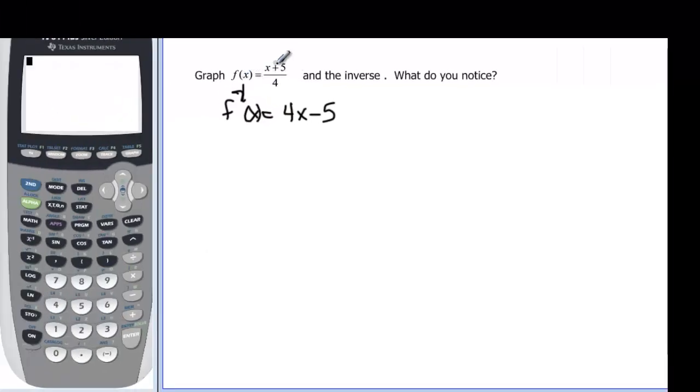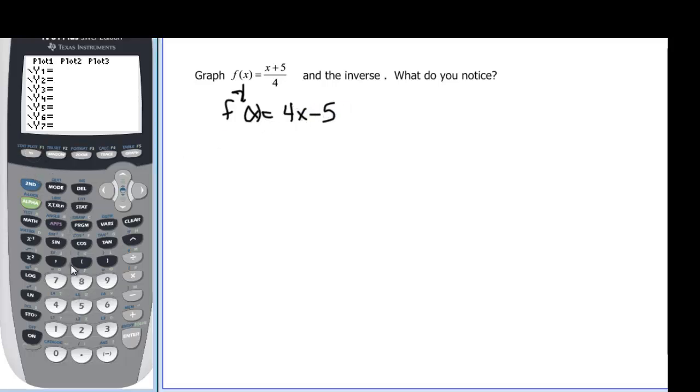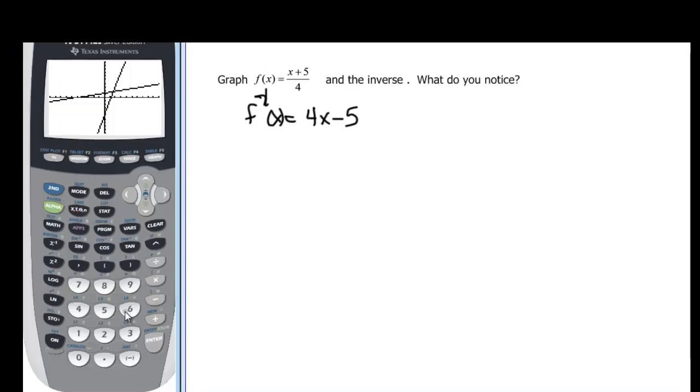This is our function. f(x) is equal to (x+5)/4, and the inverse function, if you remember, was 4x-5. So I want to graph both of those on my calculator. So in parentheses, I have to write the x+5, remember, because it's more than one term up there, divided by my 4, and then y2, I'm going to have 4x-5. And if I graph it, it says, what do you notice? And some of you may be saying, I really don't notice anything.